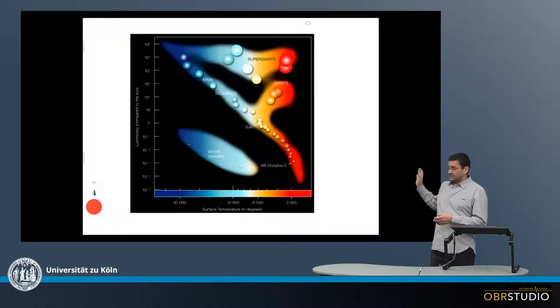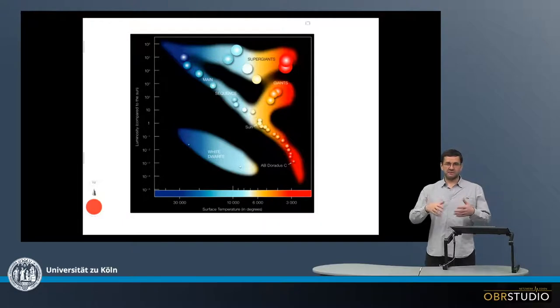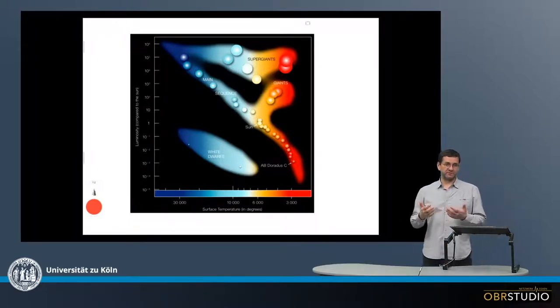Now the Hertzsprung-Russell diagram comes in various flavors, because many of the parameters of stars—mass, temperature, radius and so on—are related to each other, and it's possible to make this diagram differently.